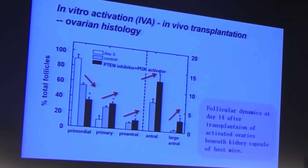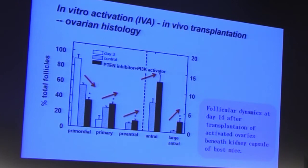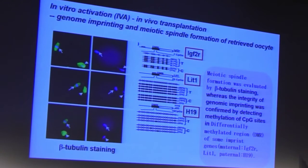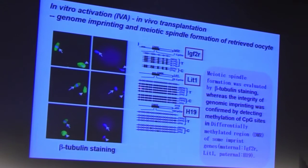We performed histological analysis to evaluate follicular dynamics at day 14 after transplantation. Gray bars indicate control and black bars indicate drug treatment. As expected, the proportion of primordial follicles decreased with drug treatment, while the proportion of primary, pre-antral, antral, and even large antral follicles all increased. We also evaluated oocyte normality: meiotic spindle formation was assessed by beta-tubulin staining, and the integrity of genomic imprinting was confirmed by detecting methylation of the DMR region of imprinted genes.